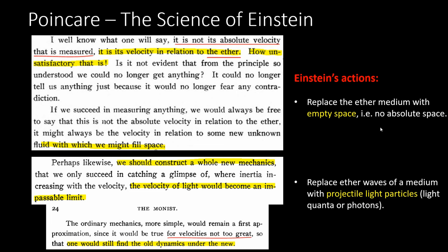Now you see how Einstein created his new idea of space. Velocity is in meters per second — space over time. The space portion of velocity, which used to be filled with ether, Einstein just got rid of, replacing it with empty space. He had to create the projectile photon light particle to go through empty space in order to explain how light works. So he's halfway there — he's taken care of space. Now he needs to take care of time.